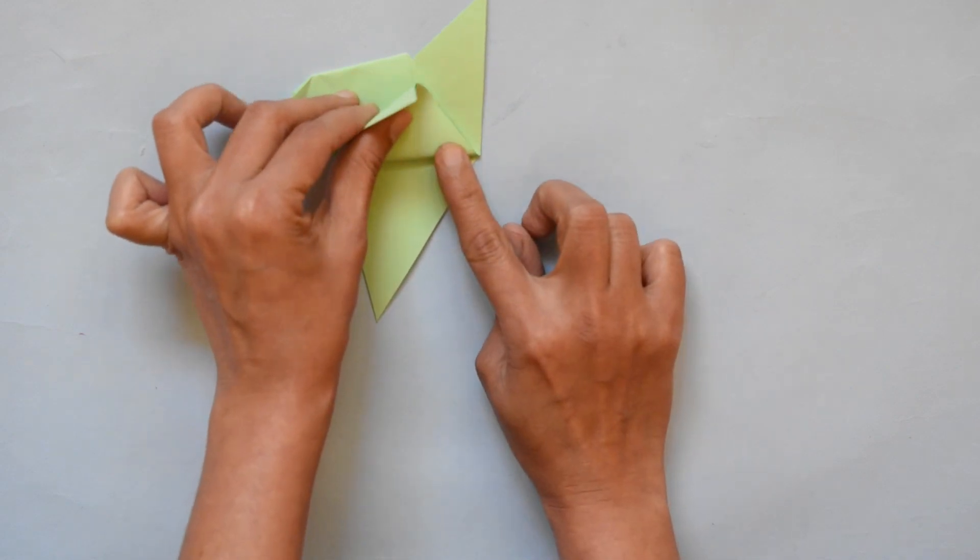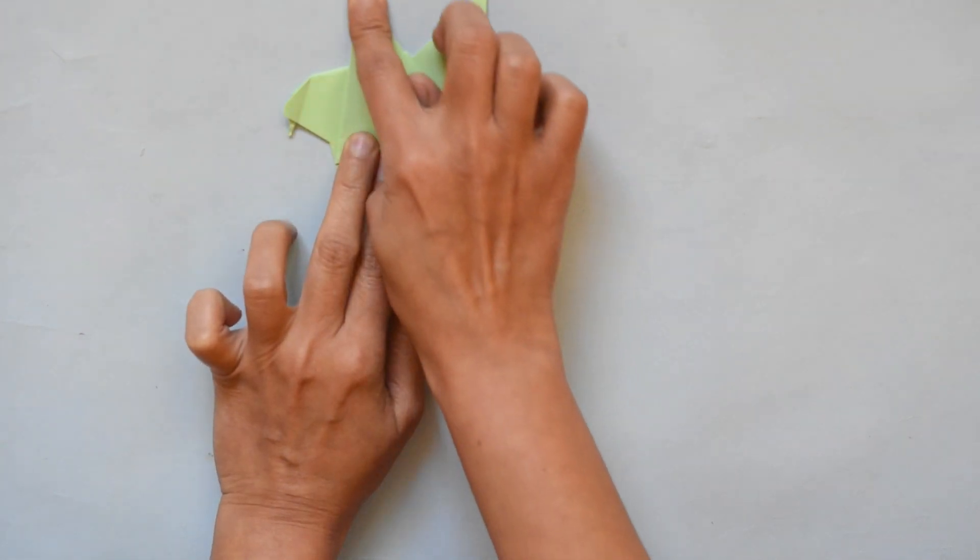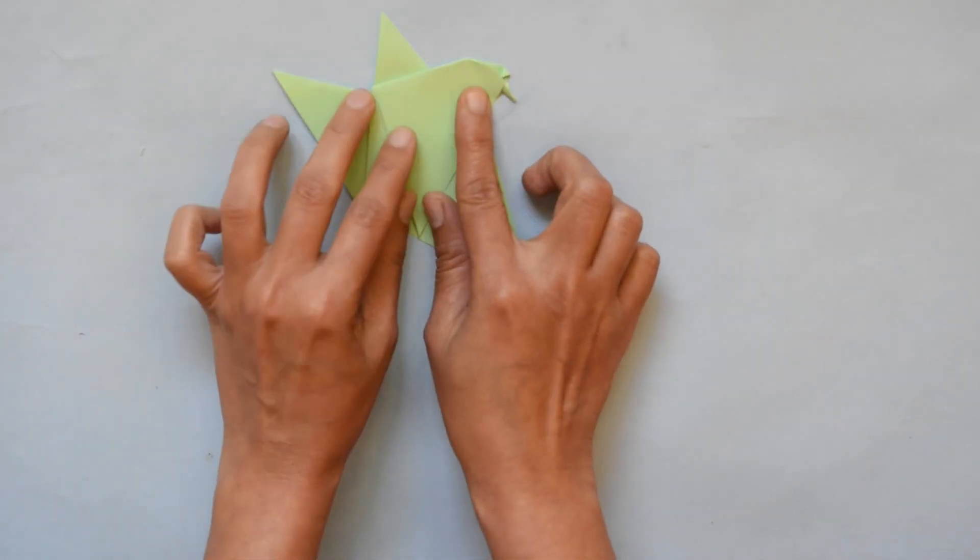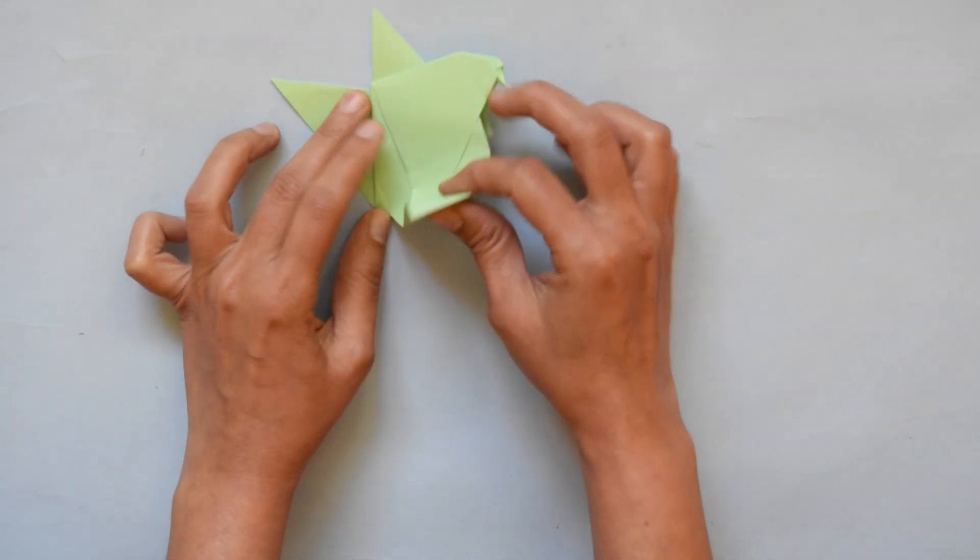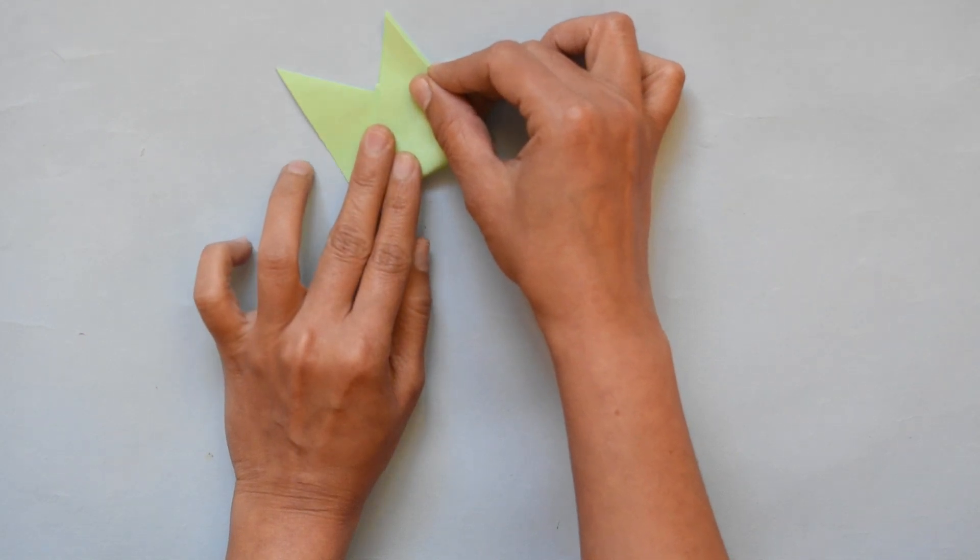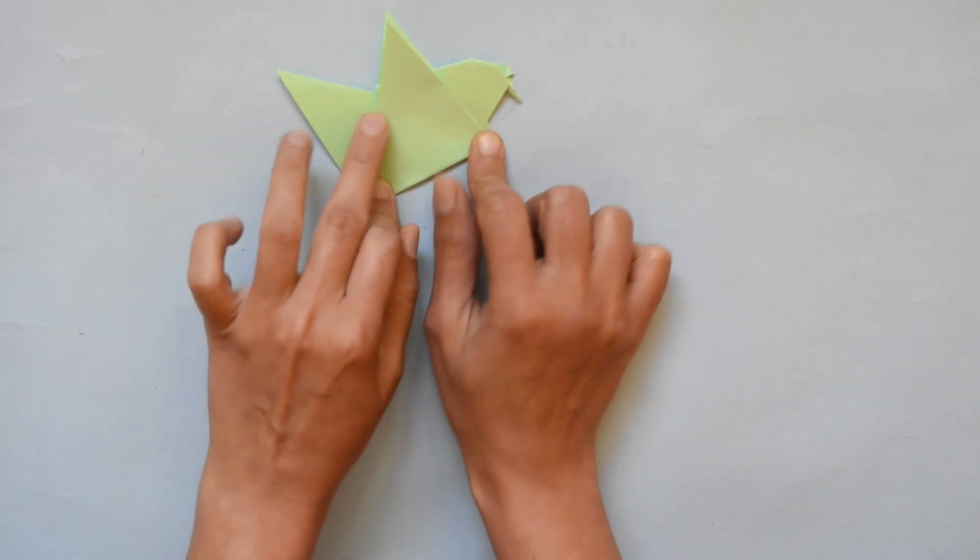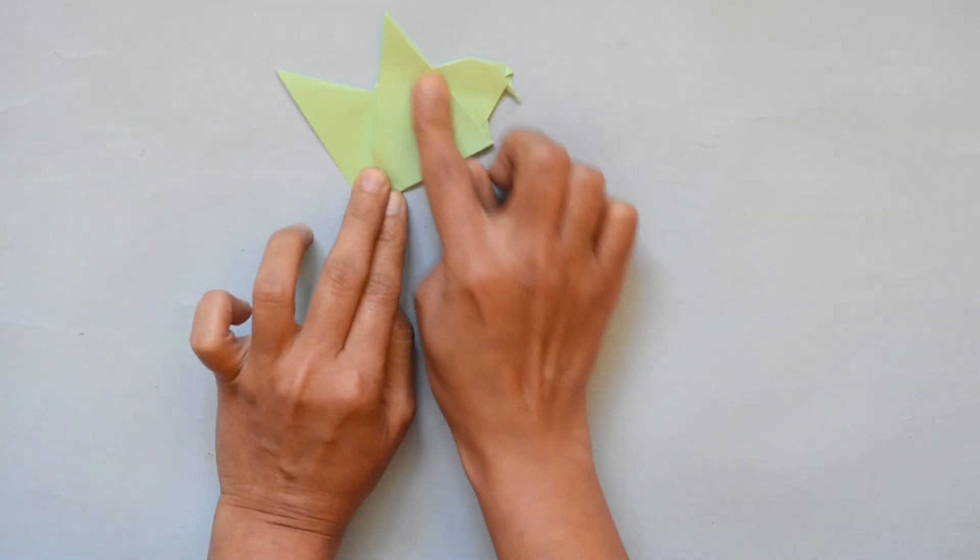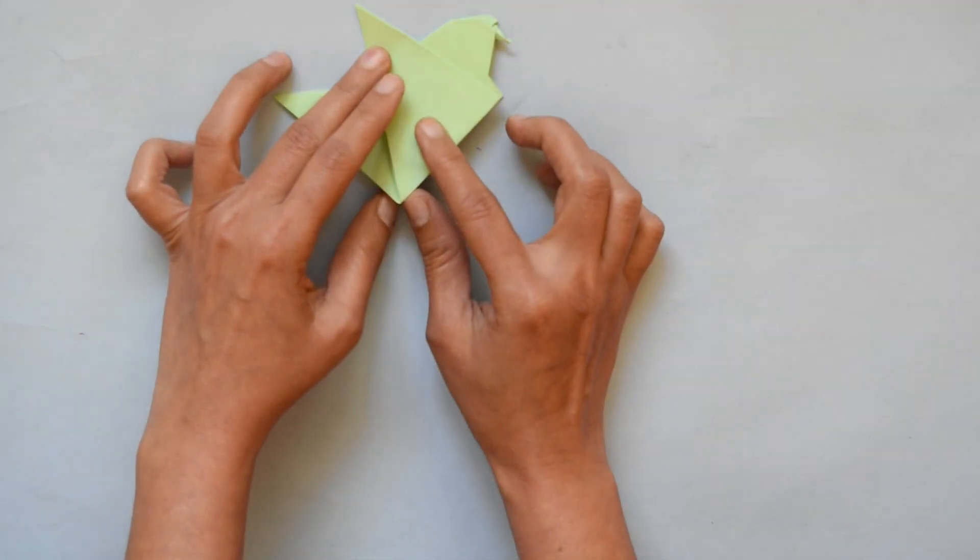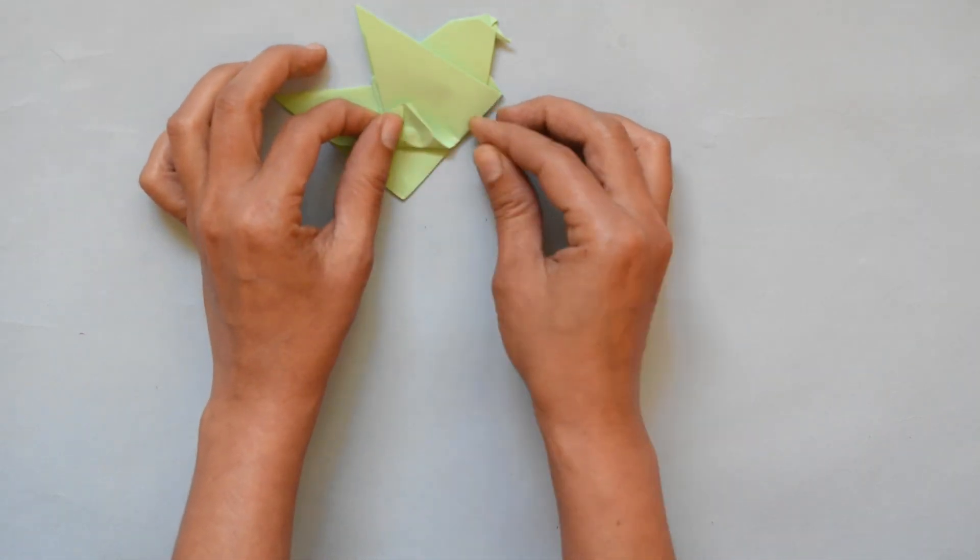Now fold this corner on the upside and press it. Now fold it in the middle. Turn the paper and do the same with the other side. Now fold it down.